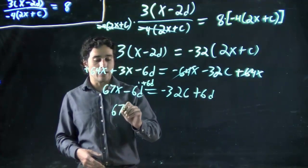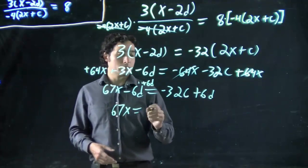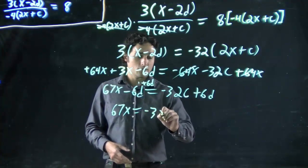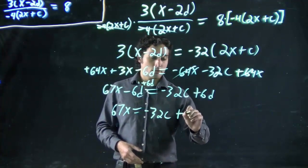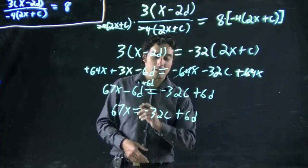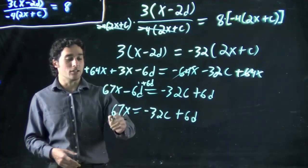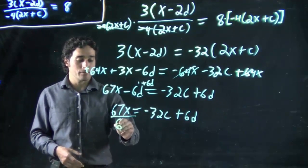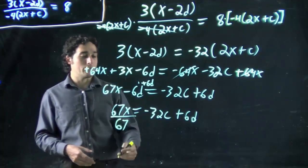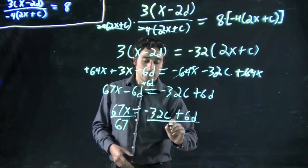And I got 67x equals minus 32c. Hopefully, you're not hearing this dreadful squeaking noise, but if you are, I'm sorry. We want to get rid of the 67. We want x on its own. What do we got to do? We got to divide. It's multiplying, so now we divide to get rid of it.